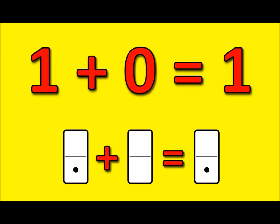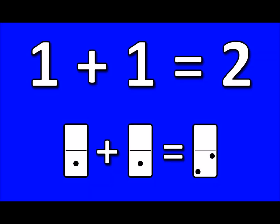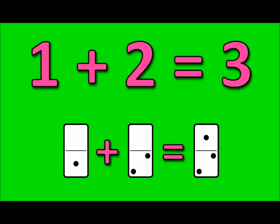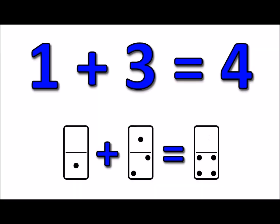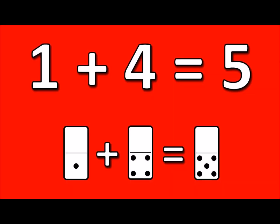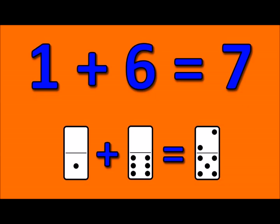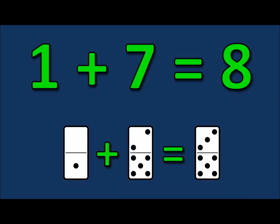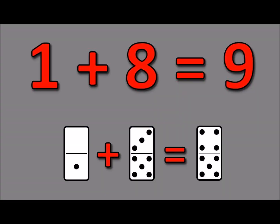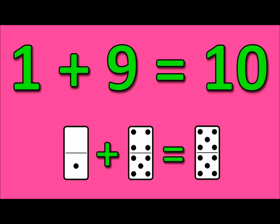1 plus 0 is 1, 1 plus 1 is 2, 1 plus 2 is 3, 1 plus 3 is 4, 1 plus 4 is 5, 1 plus 5 is 6, 1 plus 6 is 7, 1 plus 7 is 8, 1 plus 8 is 9, 1 plus 9 is 10.